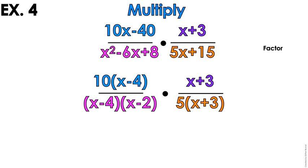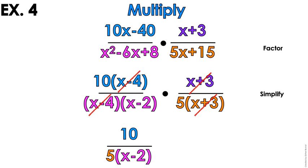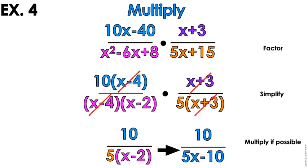Now we want to see if anything is going to simplify out. I have x minus 4, x minus 4. We're going to get rid of those. One on top, one on bottom. x plus 3, x plus 3. Get rid of those. What's left? I have a 10 on top. On the bottom, I have x minus 2 and a 5. Make sure your answer is nice and tidy at the end. So you're going to multiply if possible. And that is your answer.